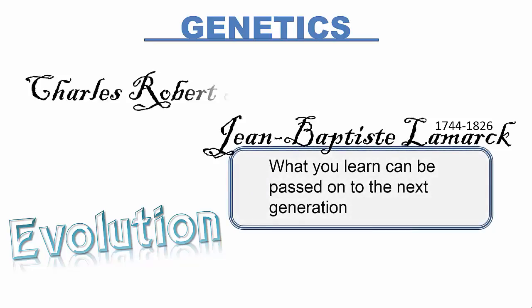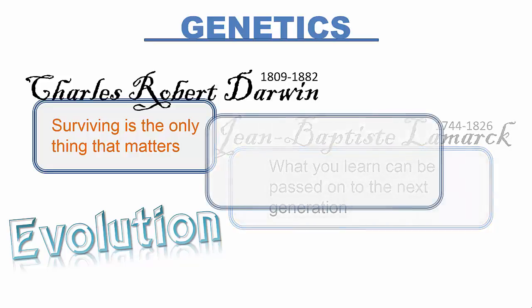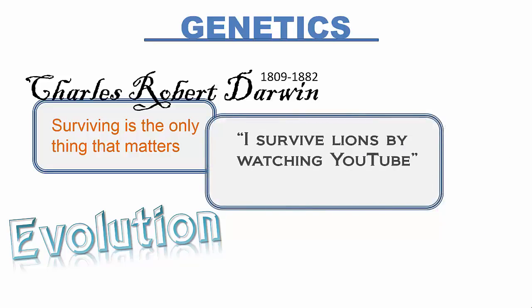Darwin believed that genetic diversity will produce both fast and slow runners. The environment will determine which survives. If fast runners outdistance the lions, their offspring will survive. If slower runners are ignored by the lions, their offspring will survive.